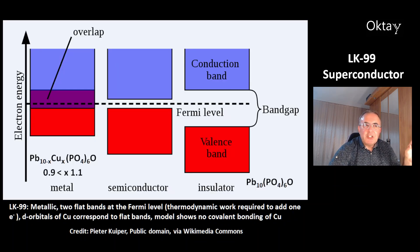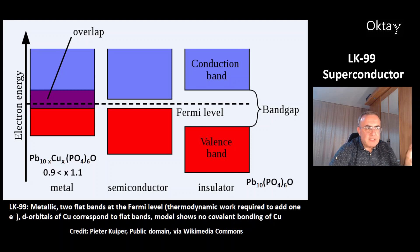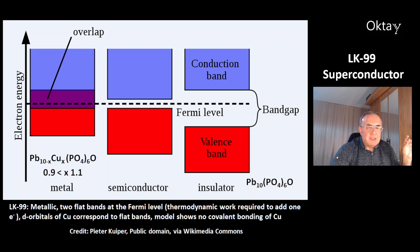This is a picture of the band structure of LK99 on the left; the lead apatite is on the right — it's an insulator. There are two bands at the Fermi level. The Fermi level is the thermodynamic work required to add one electron. The d-orbitals of the copper ions are important and correspond to flat bands, and their model shows that there is no covalent bonding of copper.